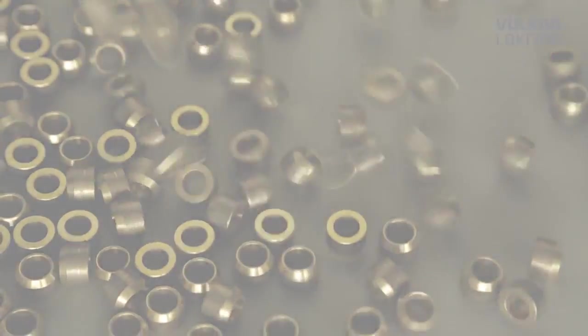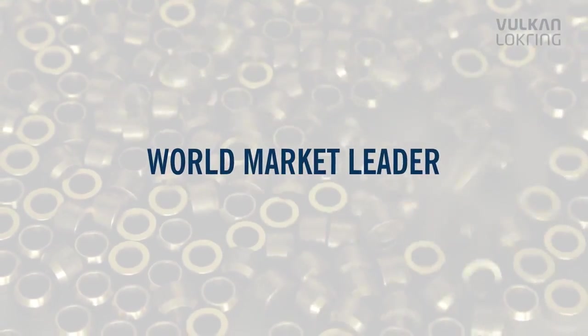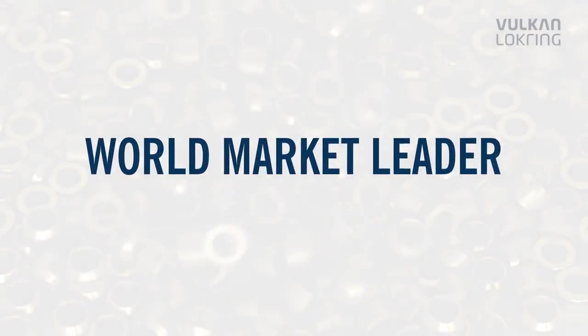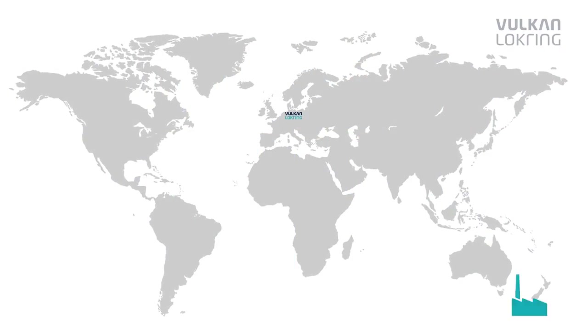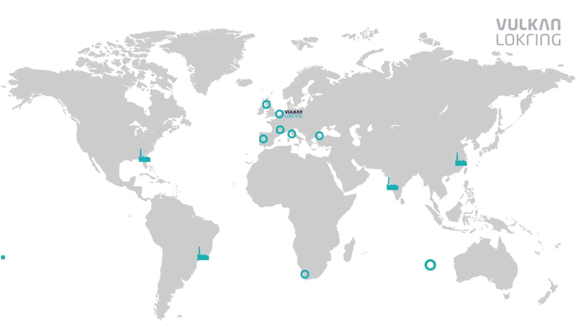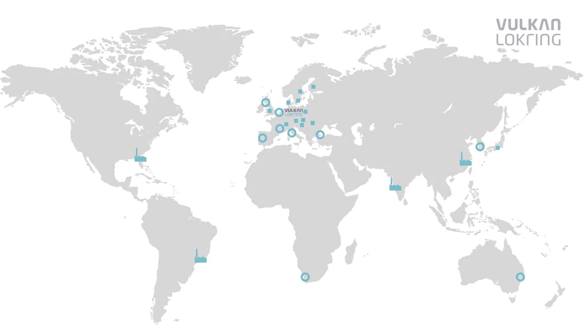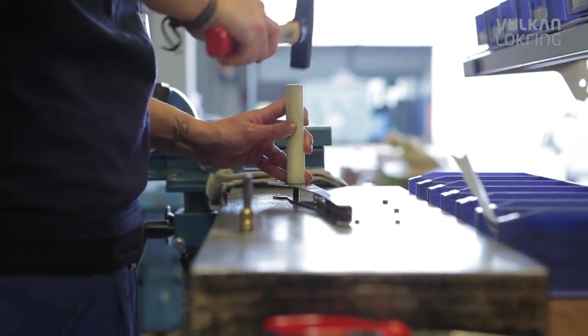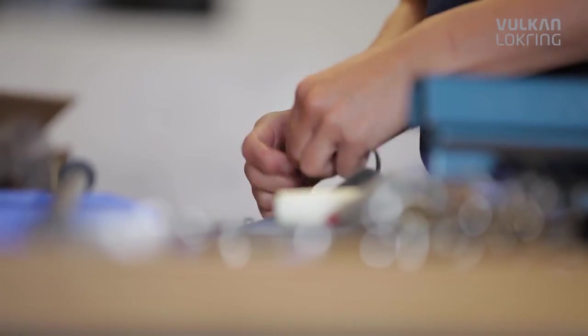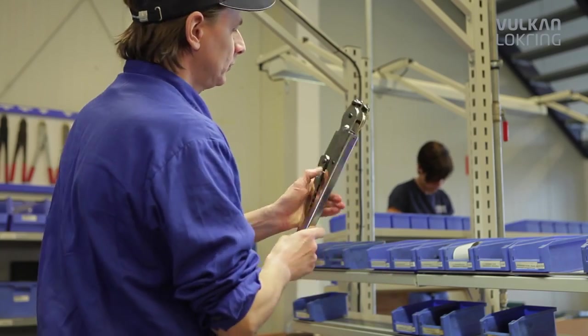That makes Vulcan Lockring the world market leader in solder-free tube connections for refrigeration and air conditioning technology. Five production sites and more than 30 subsidiary companies and sales representatives ensure intelligent solutions, top quality and optimum service.